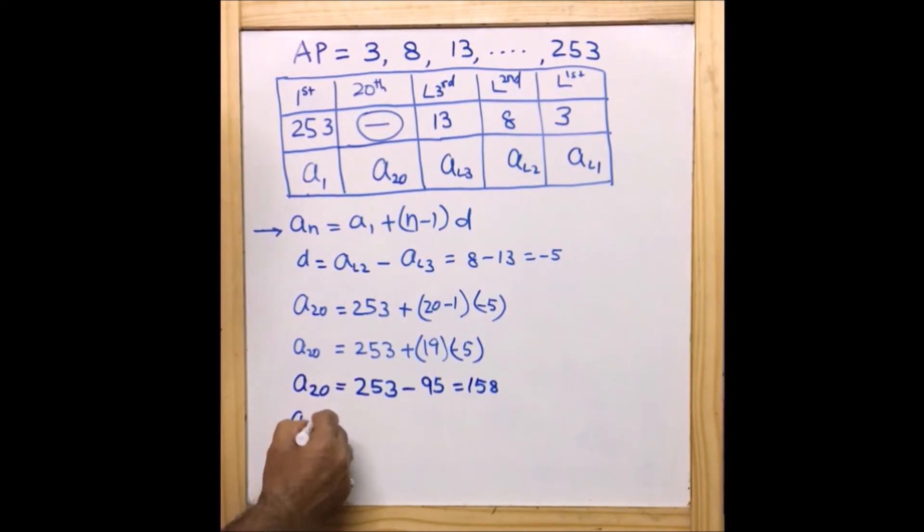Therefore we can write a_20 = 158. This is what is required. So at the end we can write therefore the value of the 20th term is 158.